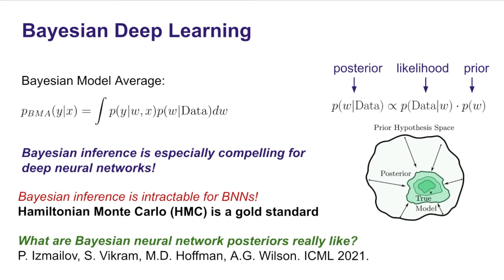Bayesian inference is distinctive because it doesn't just bet everything on a single setting of parameters. It wants to consider all possible settings of parameters weighted by their posterior probabilities, which is reflected in this integral, often called a Bayesian model average. Bayesian inference is especially compelling for deep neural nets because these neural nets can represent a wide variety of compelling explanations to a given problem that are often quite complementary, corresponding to different settings of parameters.